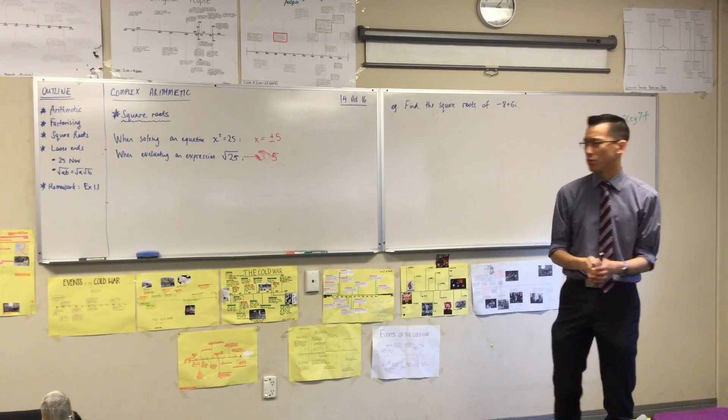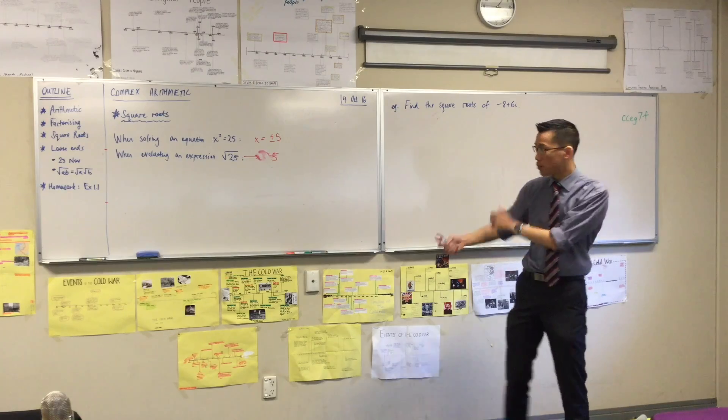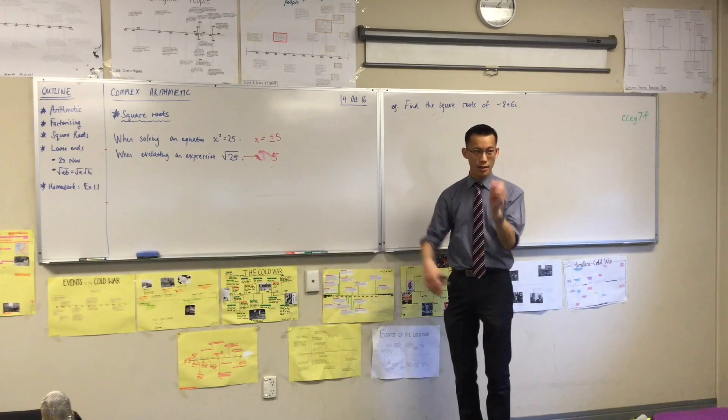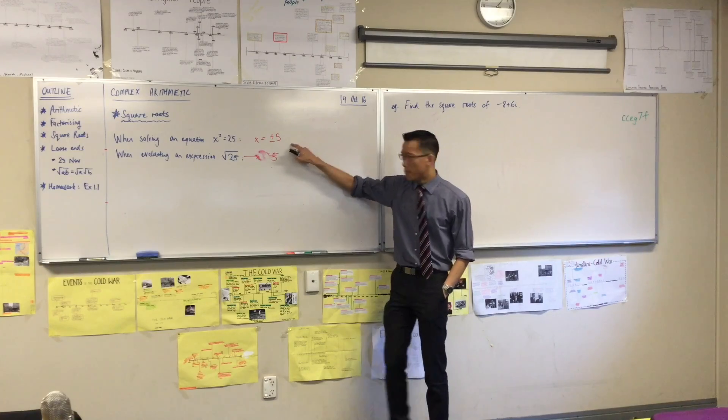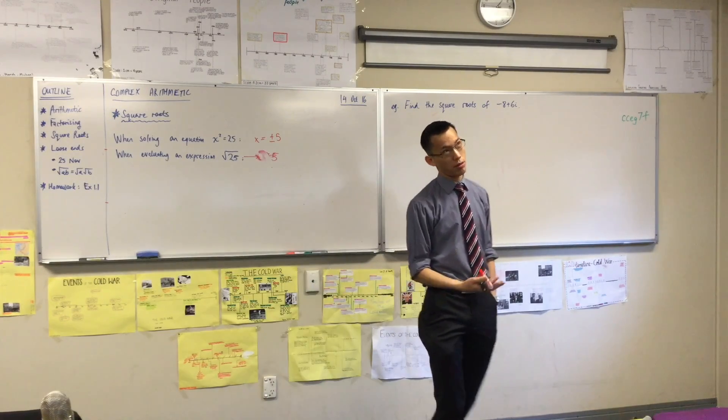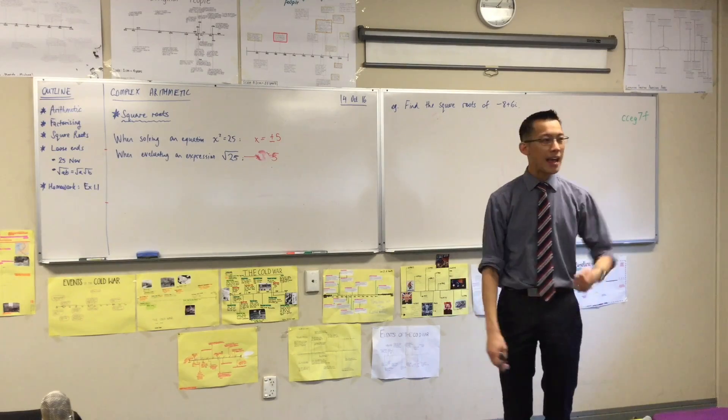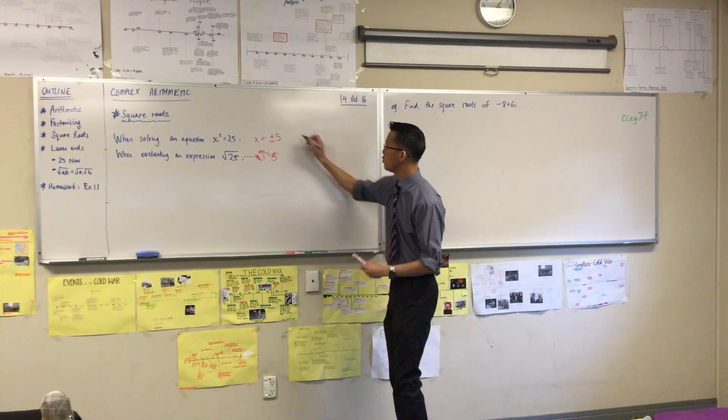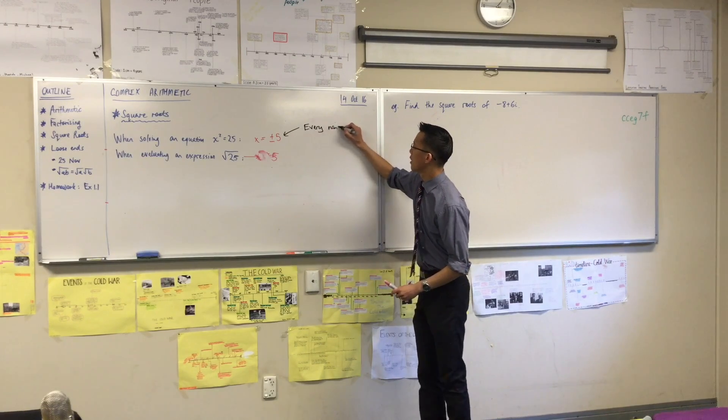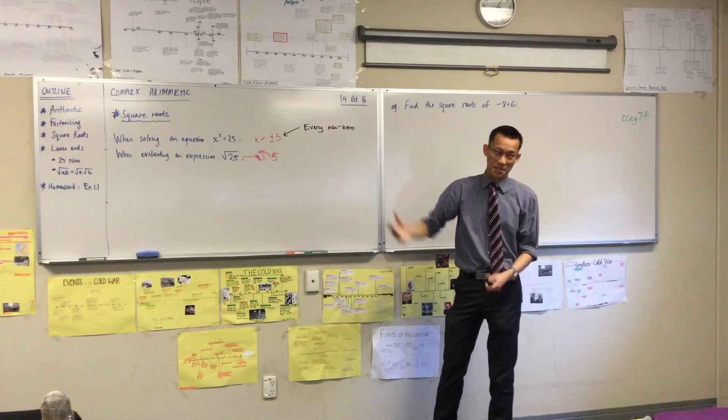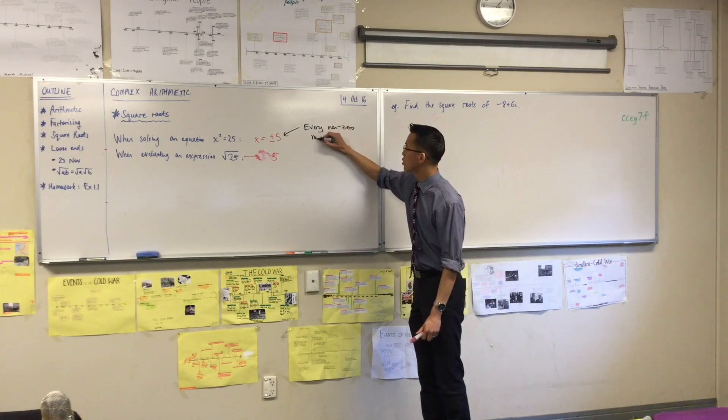And the reason why this is confusing to students is because there's actually a language here that unfortunately most students never discover that helps you sort out what's going on here. Now this is worth writing. Every non-zero number, like 25 or 36 or 37 or even negatives, like negative five, every non-zero number has two square roots. You can see why I had to pull out zero, obviously, because zero is zero.